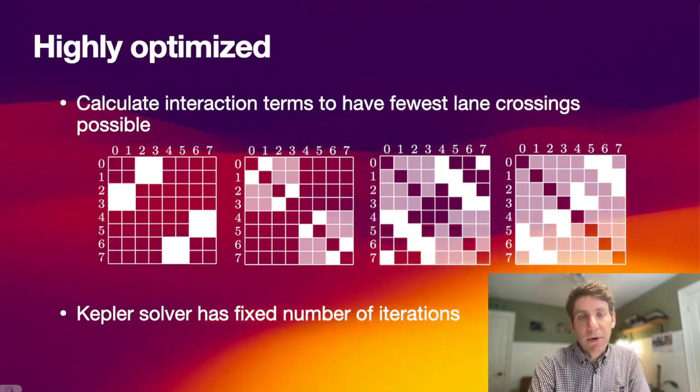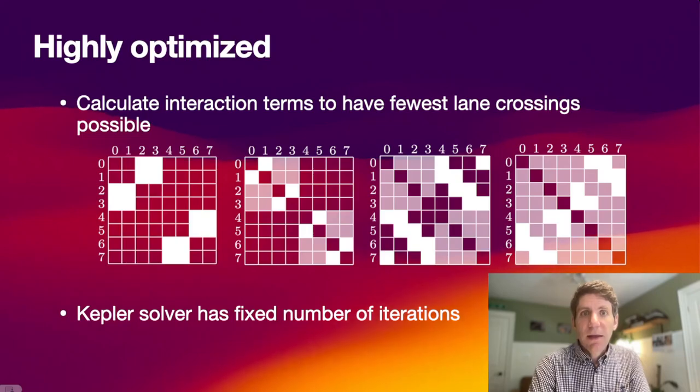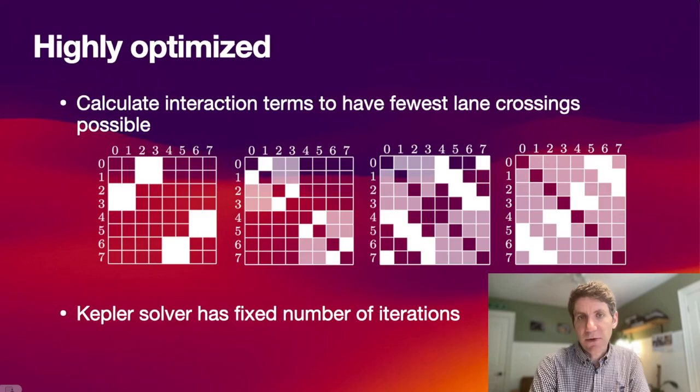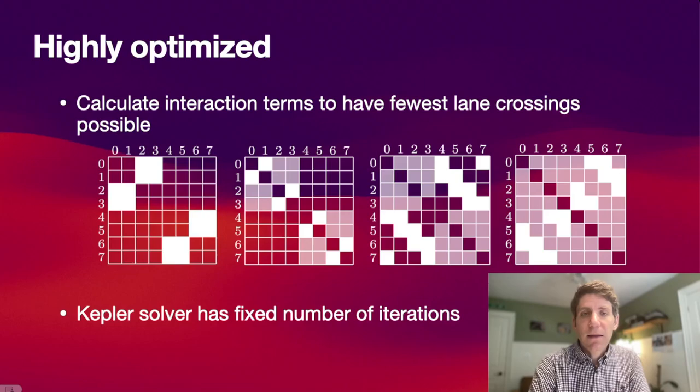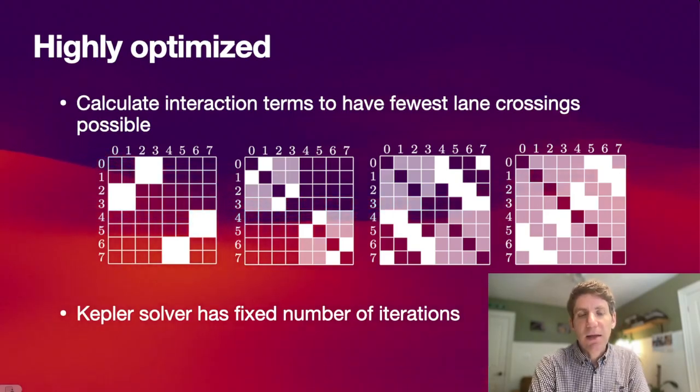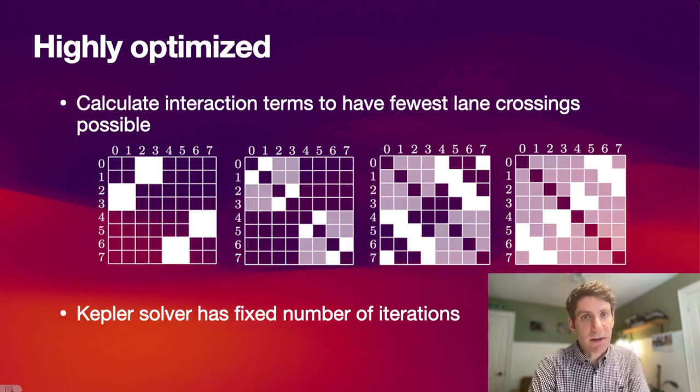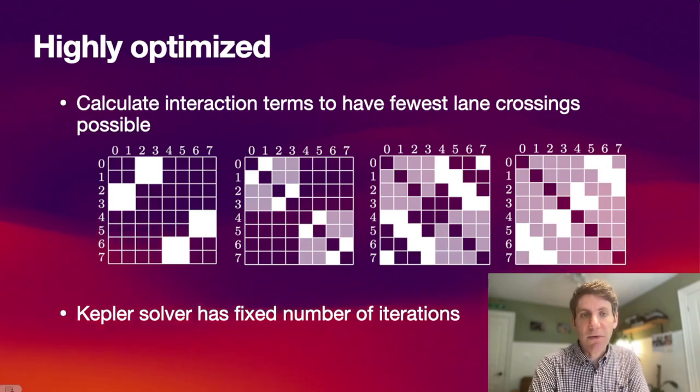We also optimize the Kepler part of the Wisdom-Holman step. Here, we no longer check for the convergence of the Kepler solver. We have instead a fixed number of iterations. This has the advantage that we can more closely follow the SIMD paradigm. We don't have to assume that some planets might finish their iteration in the Kepler solver earlier than others, because now all the planets perform the same number of iterations in the Kepler solver, and everything is always in sync.